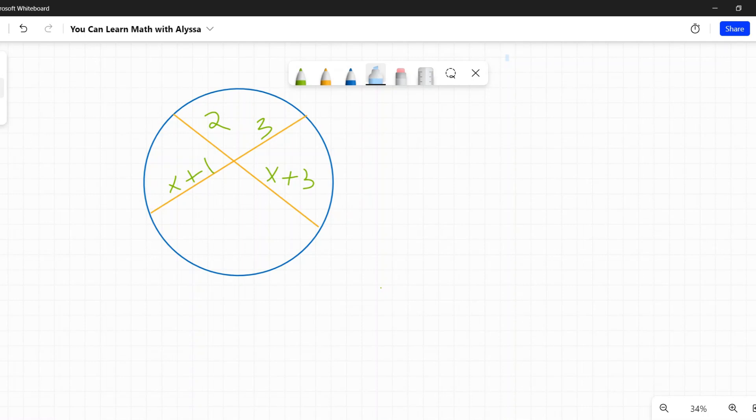Here's the next level up that they're going to throw at you. You have intersecting chords, but we have variables on both chords. They love throwing algebra in with your geometry, you think you're away from it, and you never are.